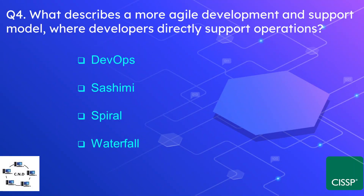Question number 4: What describes a more agile development and support model where developers directly support the operations? The options are DevOps, sashimi, spiral, and waterfall. The correct option is DevOps, where developers are directly involved with operations.